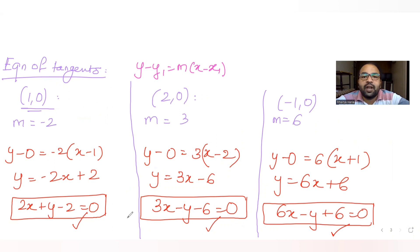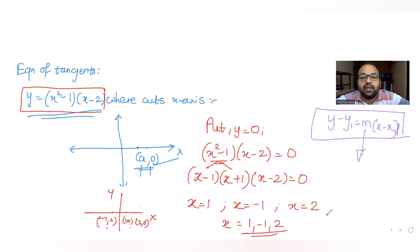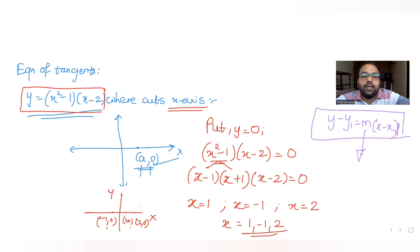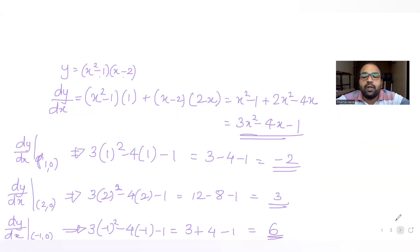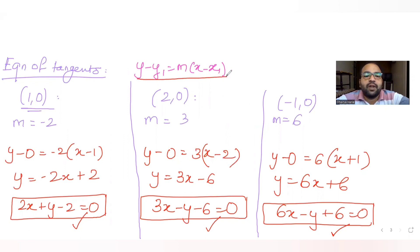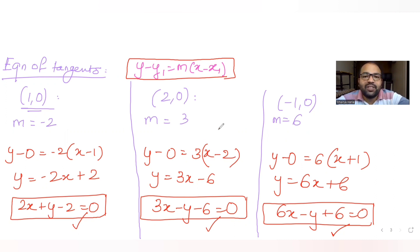To summarize the approach: first find the coordinates where the given curve intersects the x-axis by putting y as 0. Then differentiate y with respect to x and evaluate at those coordinates to get the slopes. Finally, use y minus y1 equals m times x minus x1 to get the equations of the tangents. I hope you understood how to solve this type of question. Like, share, and subscribe if you find these helpful. Thank you.